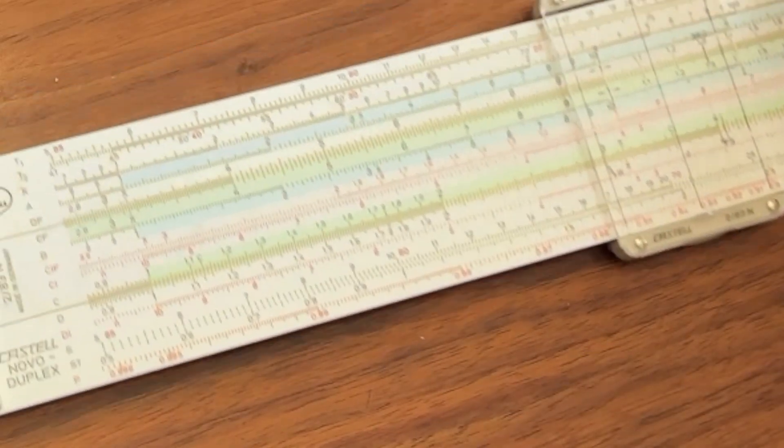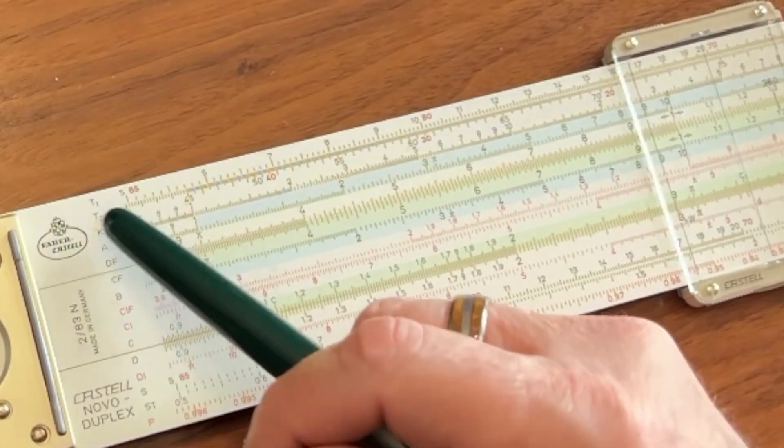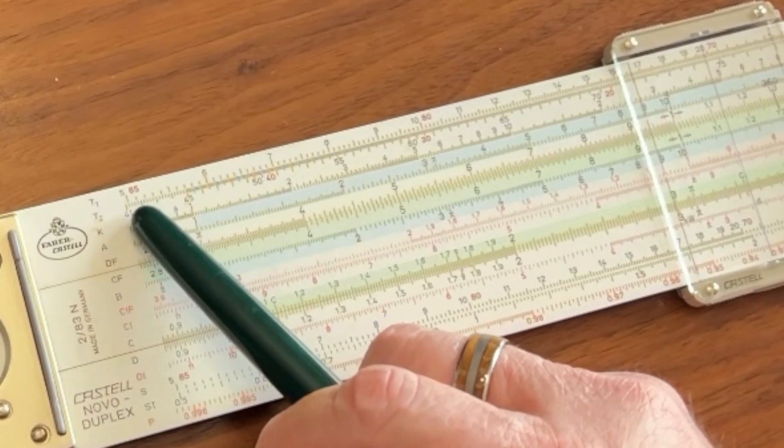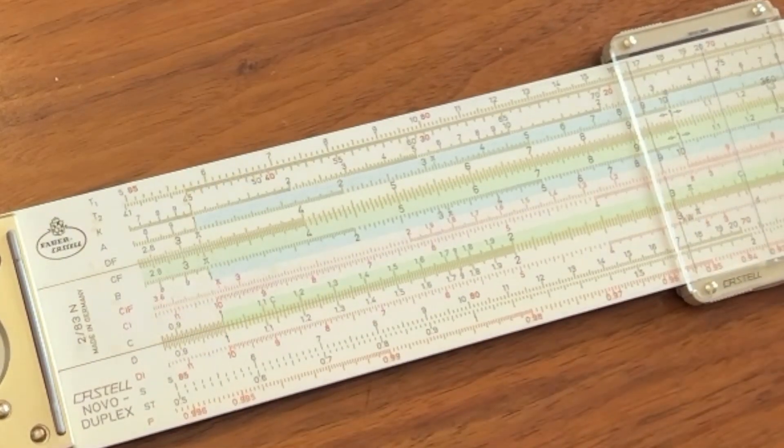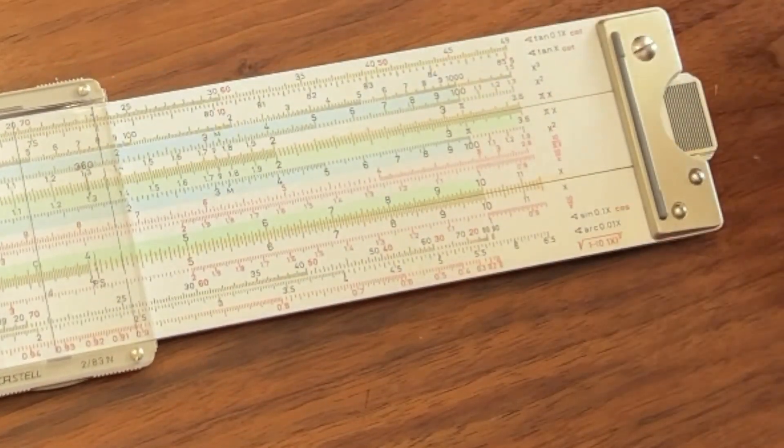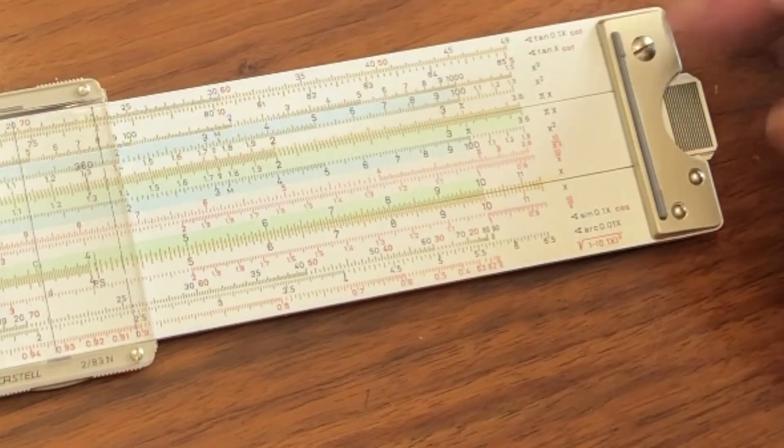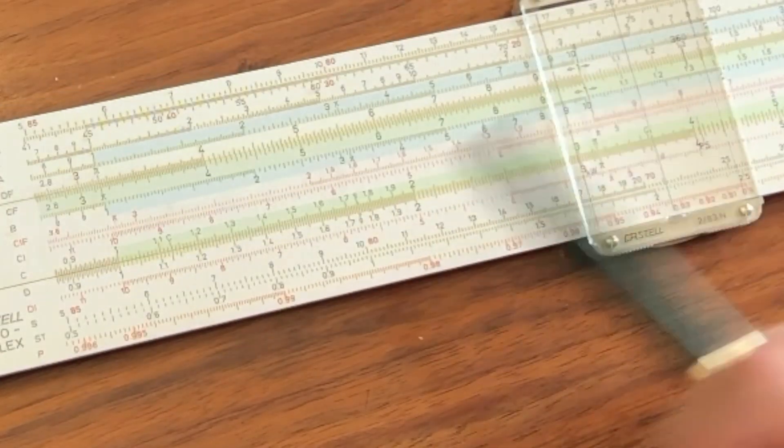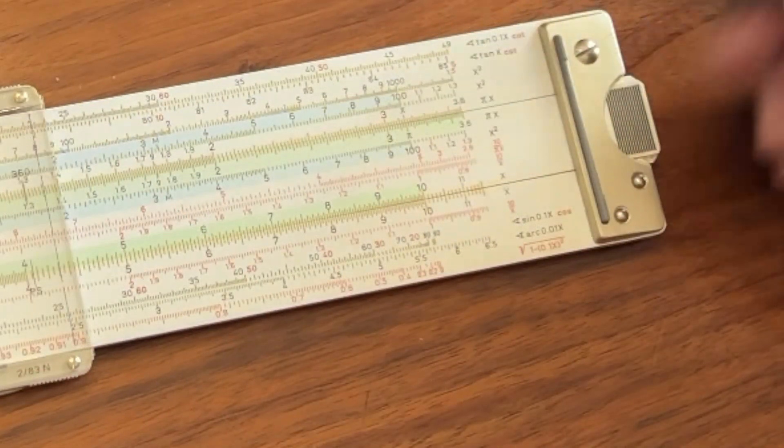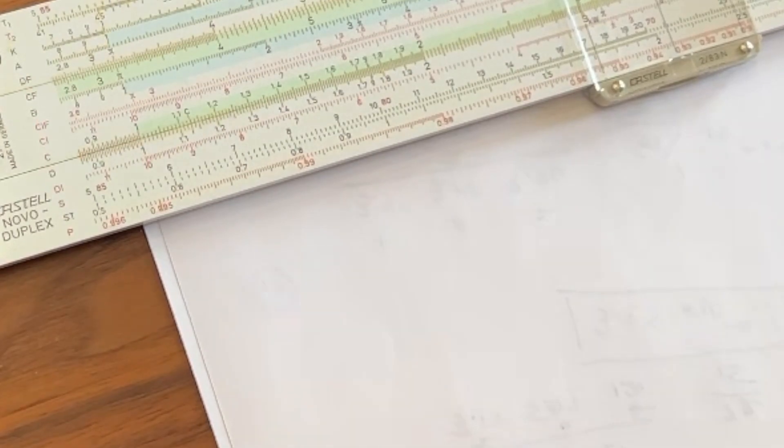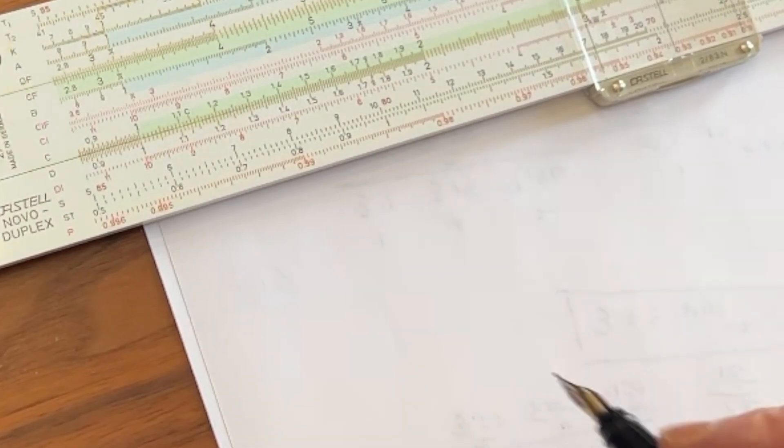Now the tangent function is a little bit different here. Notice that we have two tangent scales. The first tangent scale goes from 5.7, and then it comes up to 45. And then it goes from 45 up to about 84.3. Well, the reason for that is to help you place your decimal place.